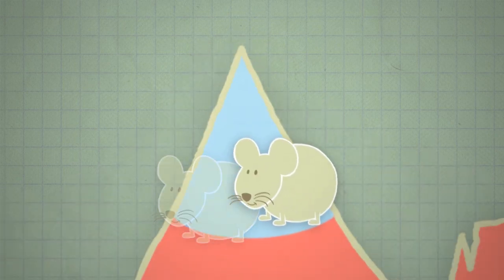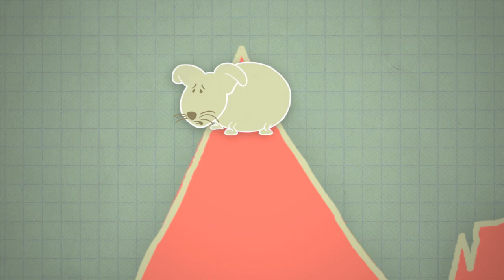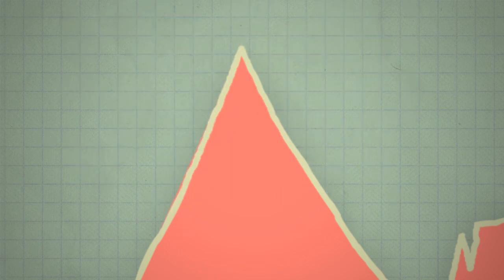The question is, if average temperatures continue to rise, how long before pikas can't move any higher, and all of them are gone for good?